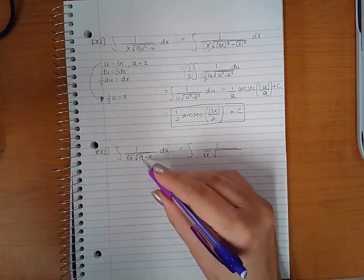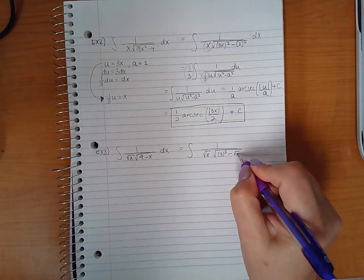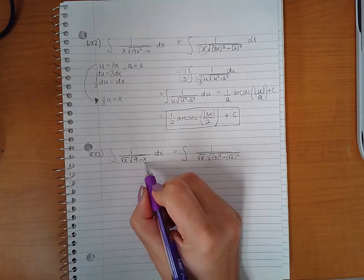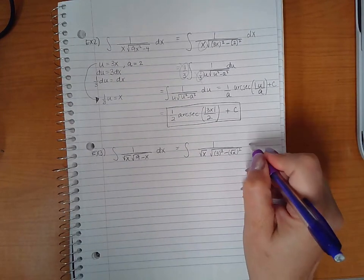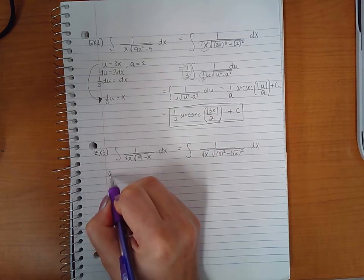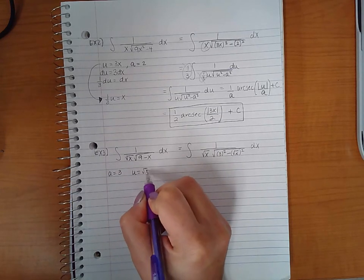So in the constant, I can tell that that's 3 squared. For the variable, it will have to be the square root of x squared. So that these undo each other, and I just have the x. So these two statements are in fact equivalent. Now this helps me identify that a is going to be 3, and u is going to be the square root of x.